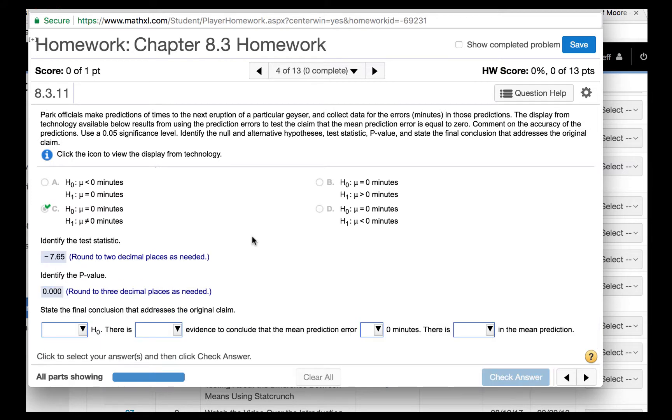Now it says state the final conclusion that addresses the original claim. Since our p-value is less than alpha, alpha is 0.05, then we are going to reject the null hypothesis. Since we reject the null hypothesis, we will be rejecting the claim that the mean prediction error is equal to zero. So there is sufficient evidence to conclude that the mean prediction error is not zero minutes. There is some error in the mean prediction.